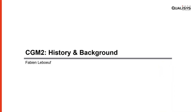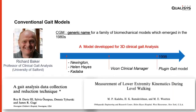Now over to Fabien. So first of all, we need to define what the conventional gait model is. These terms came from Professor Richard Baker, who used them during his tutorial sessions. The conventional gait model is a generic name for the series of models developed during the early 1980s from the work of Davis and Cabada. You may find different versions in the literature — the Newington model, the LNI model — and the last one was distributed in 1998 and called the plug-in gait model.